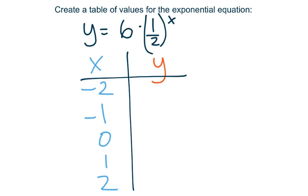This one involves a fraction as the base of the exponent, which means we're going to see exponential decay. So let's plug in -2 for x.